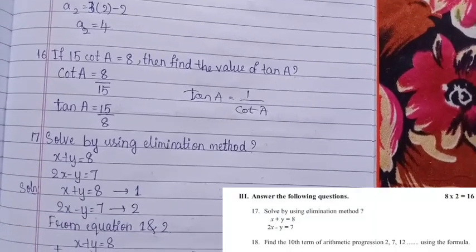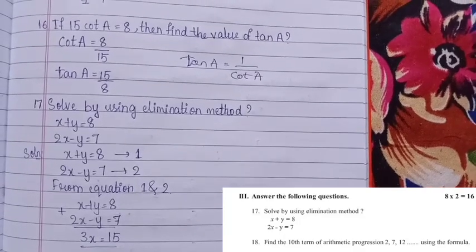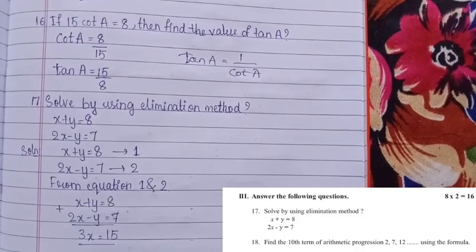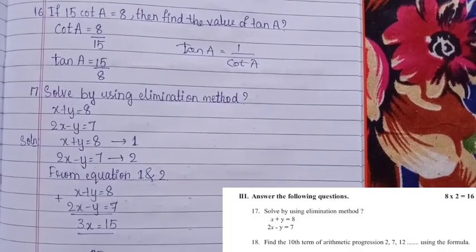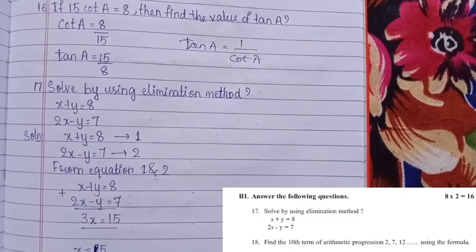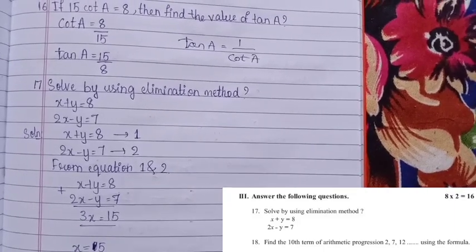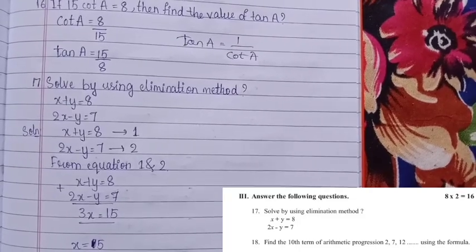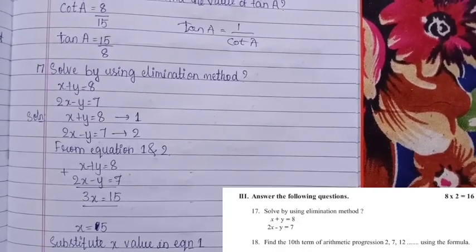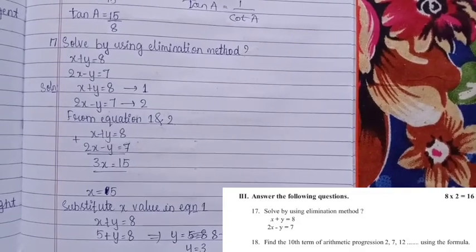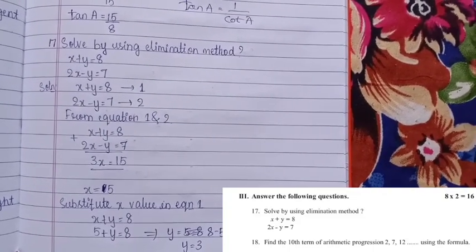Solve by elimination method: x + y = 8 (equation 1), 2x − y = 7 (equation 2). Adding both equations: x + 2x = 3x, y and −y cancel, so 3x = 8 + 7 = 15. Therefore x = 5.